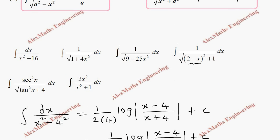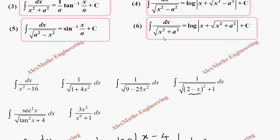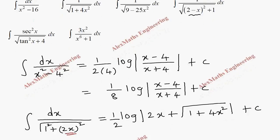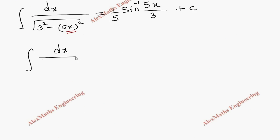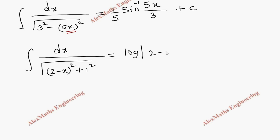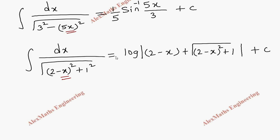Question 4: ∫dx/√((2−x)²+1). The entire expression (2−x) is treated as x, and 1 is treated as a, so this is of the form √(x²+a²) — Formula 6. Wherever x appears we put (2−x), and wherever a appears we put 1. The answer is log|(2−x) + √((2−x)²+1)| + C. Since the coefficient of x is −1, we divide by −1, giving −log|(2−x) + √((2−x)²+1)| + C.